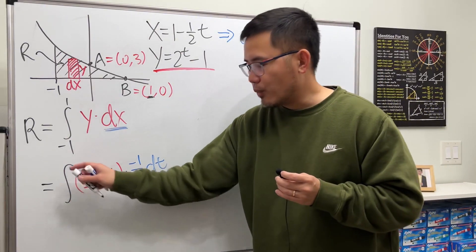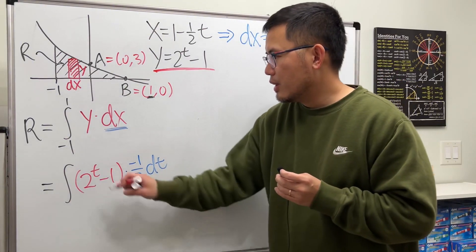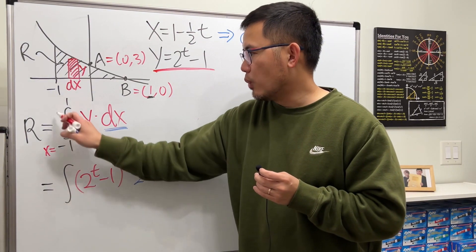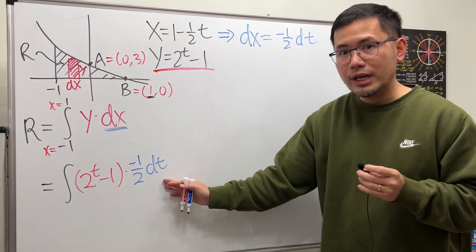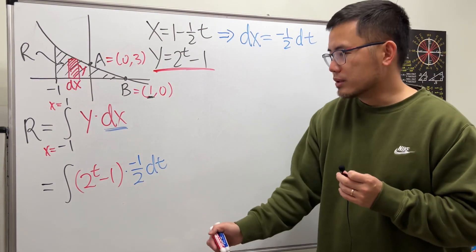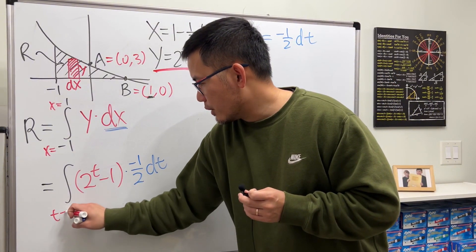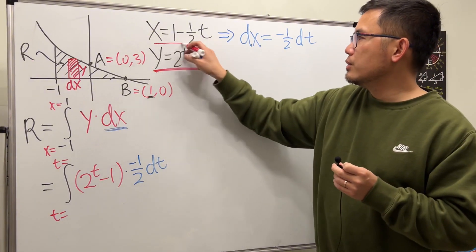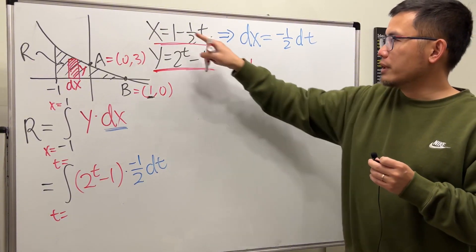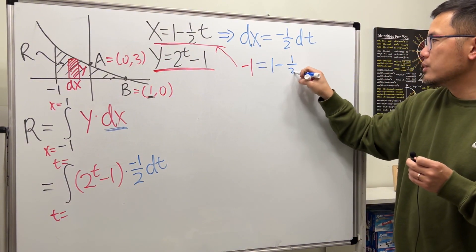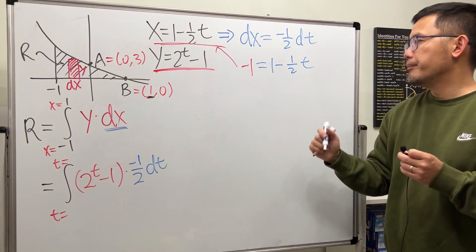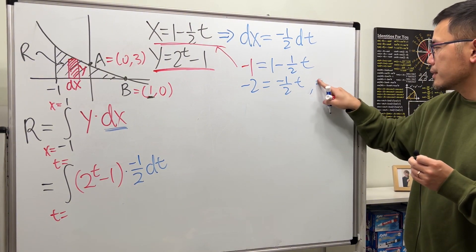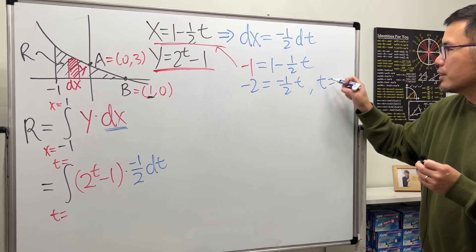Now, do not just put down negative 1 and 1. Why? Because this integral, when we set down negative 1 to 1, it was in terms of x. That means x is going from negative 1 up to positive 1. But right here we are in the t world, so make sure you also get the t values accordingly. So how do we get the t values? Have a look. When x equals negative 1, plug into here. So again, look at this equation. Plug in negative 1 for x, and we have 1 - 1/2t. Now let's solve for t. Put this to the other side, we get -2 = -1/2t. Then multiply both sides by negative 2, we get t equals positive 4.